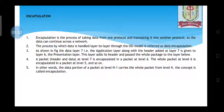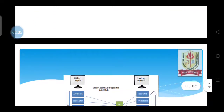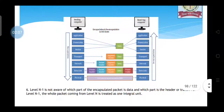As shown in the figure, data at layer 7 — that is the application layer — along with headers added at layer 7, is given to layer 6, the presentation layer. This layer adds its header and passes the whole package to the layer below. This is the diagram of the OSI model, and we have 7 layers in the OSI model.